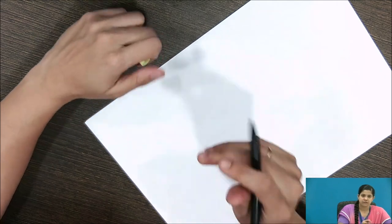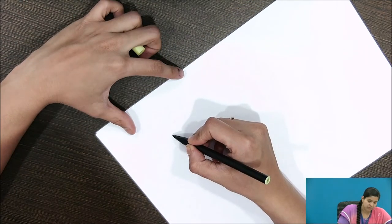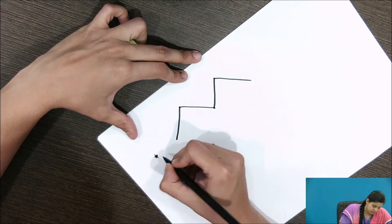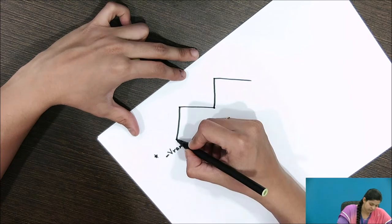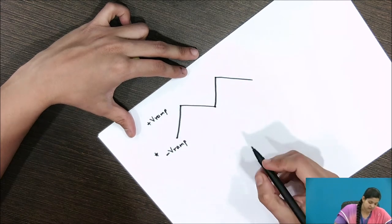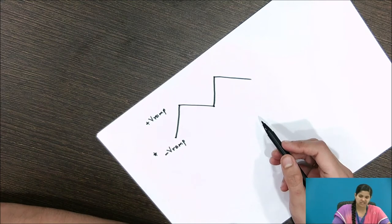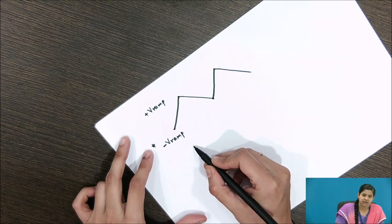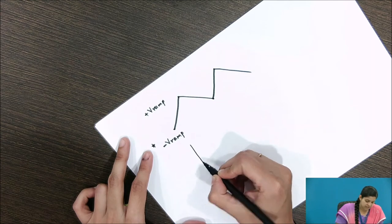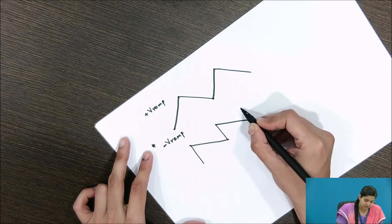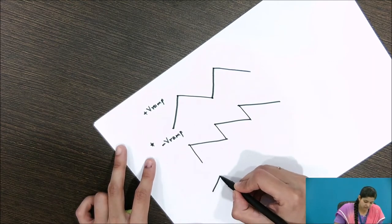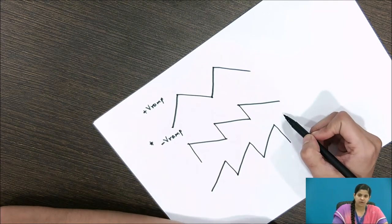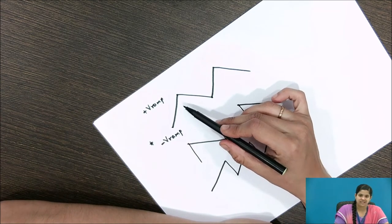Now we look at the difference between triangular and sawtooth waves. A triangular wave has equal rise and fall times — the time to switch from negative ramp to positive ramp voltage and back is equal. In a sawtooth waveform, the rise and fall times are unequal — the rise time can be faster than the fall time, or vice versa where the fall time is faster than the rise time.